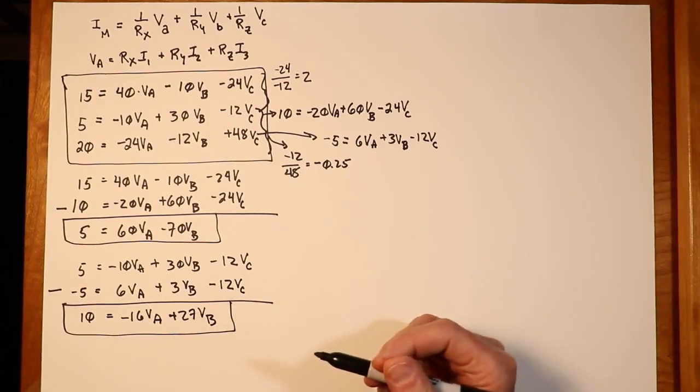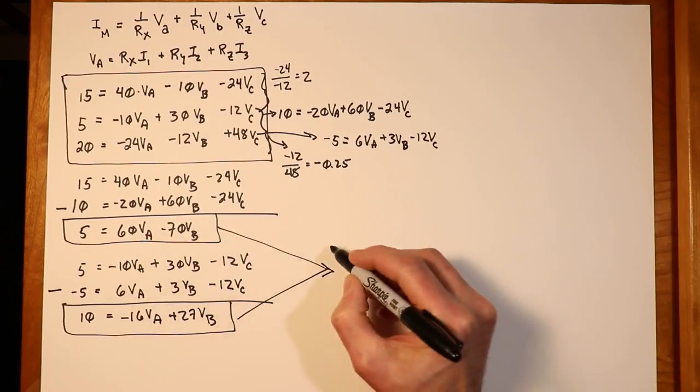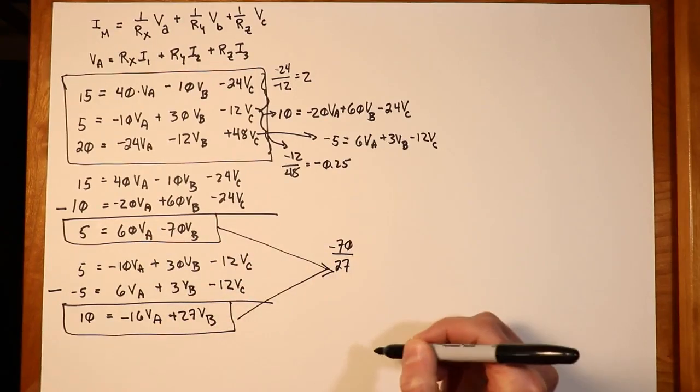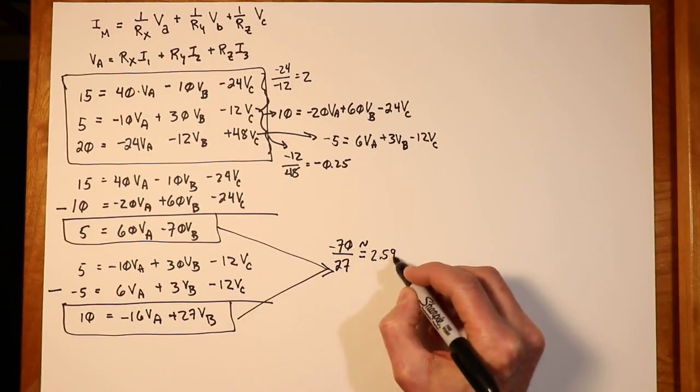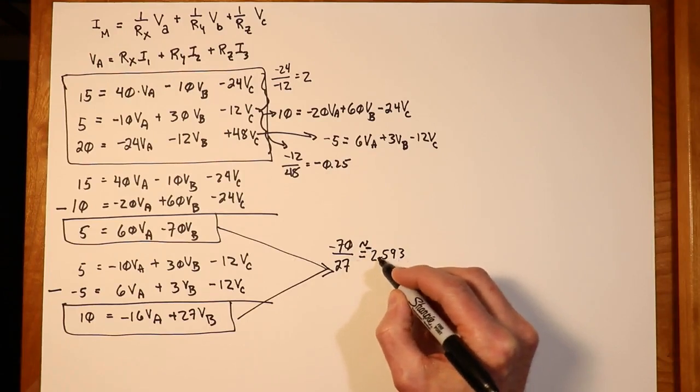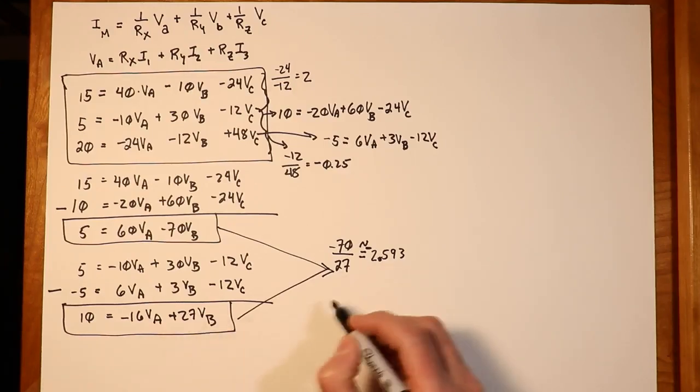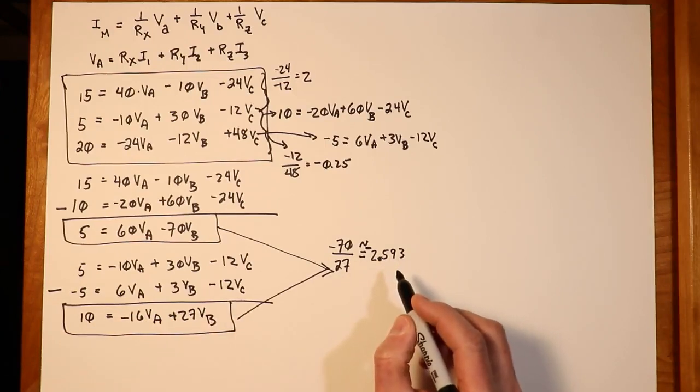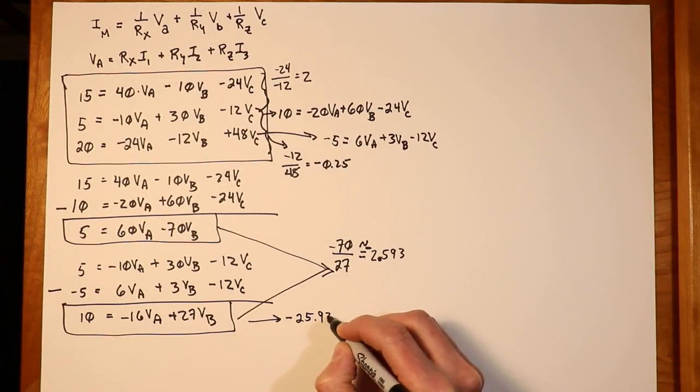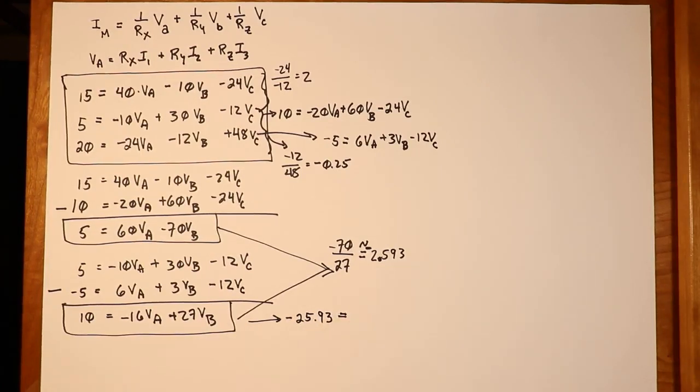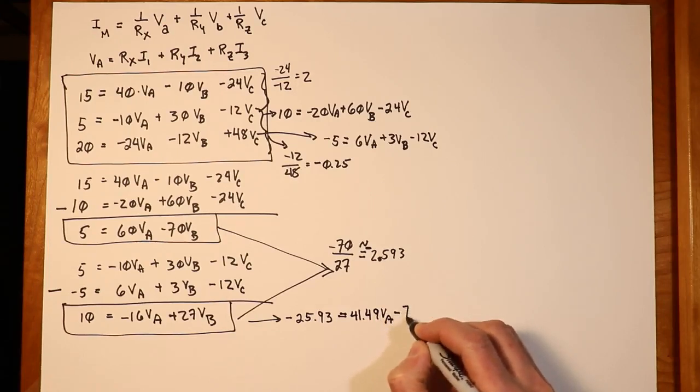I'm going to repeat the process. So I look at these two equations and I say, what's the coefficient to get rid of the Vb's? Well, that's going to be minus 70 over 27. And that's going to work out to approximately 2.593, negative. Don't want to forget my minus sign in there. So what am I going to do? Well, I'm going to take this value and I'm going to multiply this equation by this. So what is that going to get me? When I multiply this bottom equation by 2.593, we are going to wind up with negative 25.93 equals 41.49 Va minus 70 Vb.